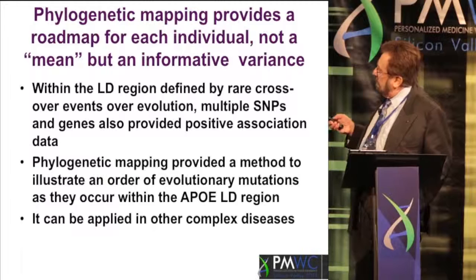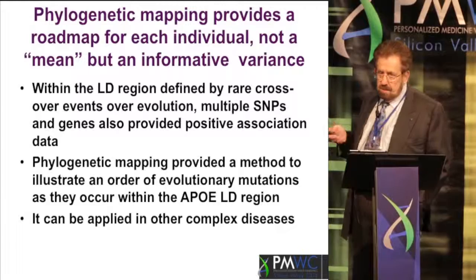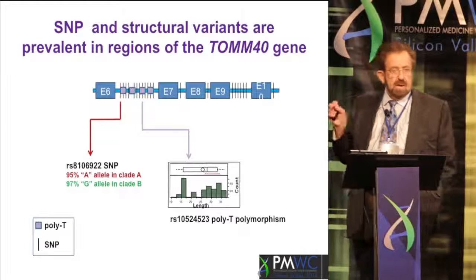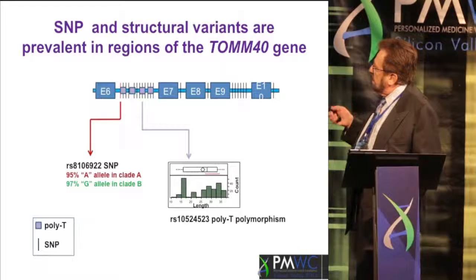I'm going to walk you through this with respect to Alzheimer's to make the definition clear, and then show you another example. In Alzheimer's disease, we took the region in the middle of the linkage disequilibrium region that had several genes — APOE, TOMM40, APOC1.